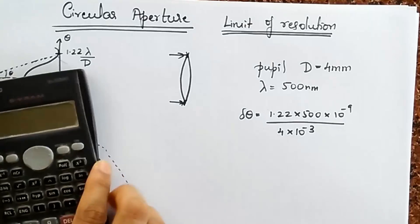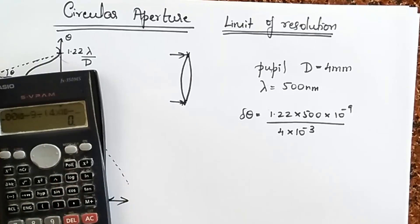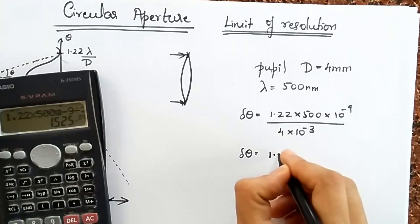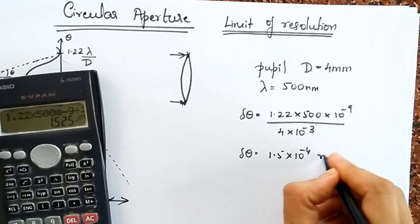Let's look at these numbers. Let's put them inside my calculator. 1.22 into 500 shift 10 to the minus 9 divided by 4 shift 10 to the minus 3. I get a number which is 1.5 into 10 to the minus 4 radians.